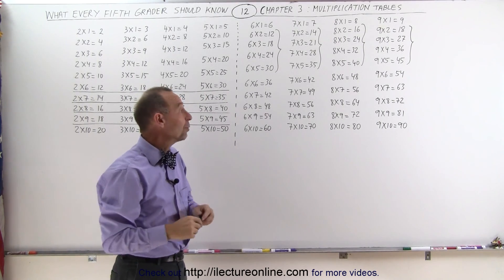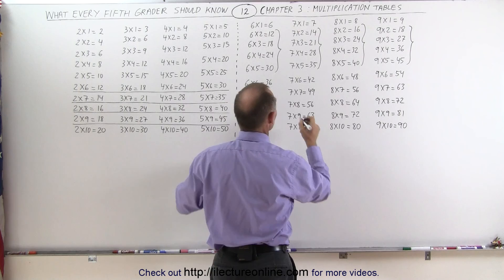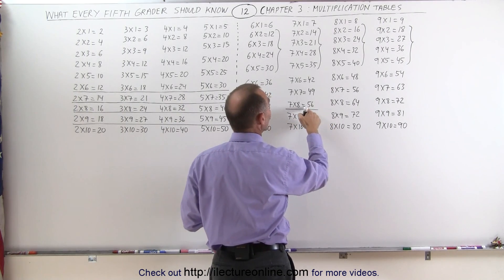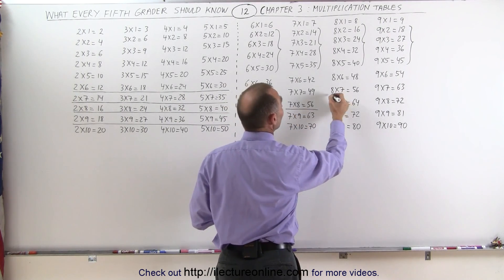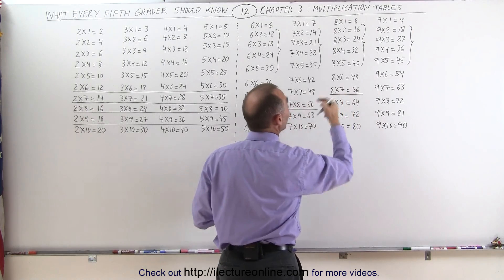However, again, for some of these, we have some really neat tricks, such as 7 times 8 is 56: 5, 6, 7, 8, and 8 times 7 is 56: 5, 6, 7, 8.